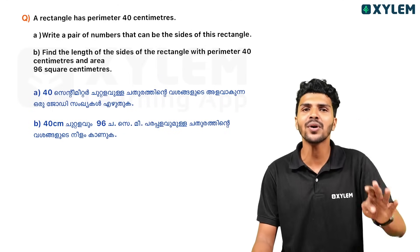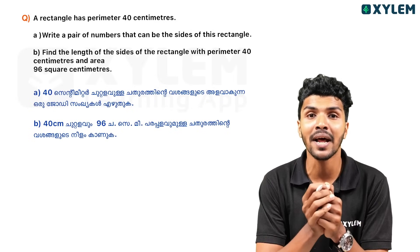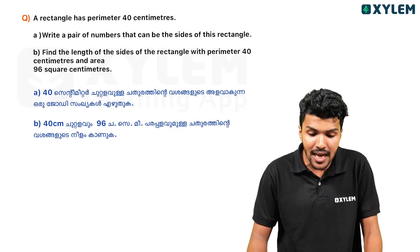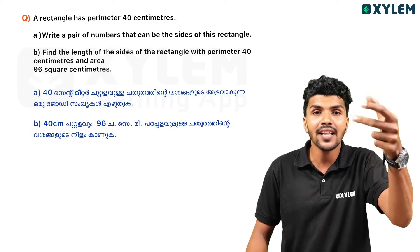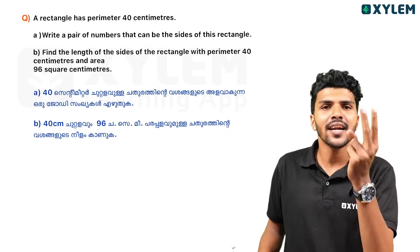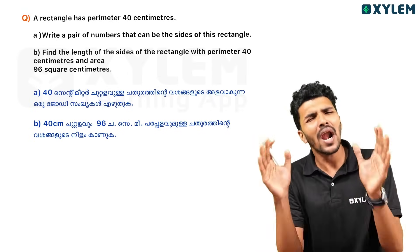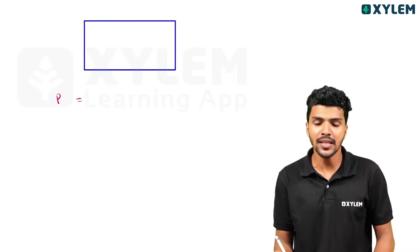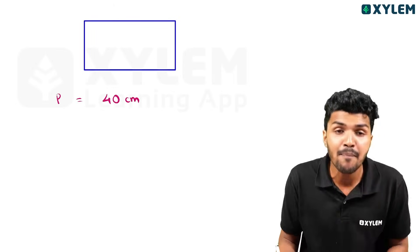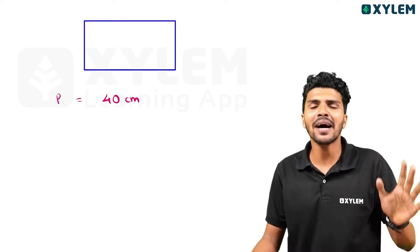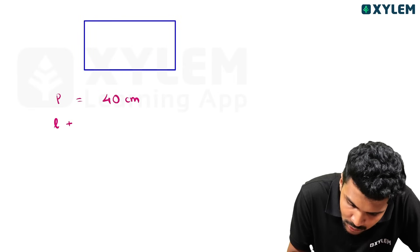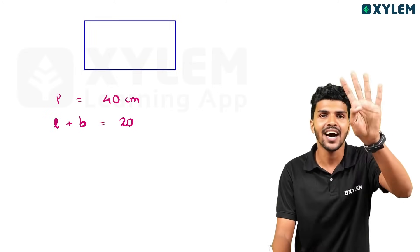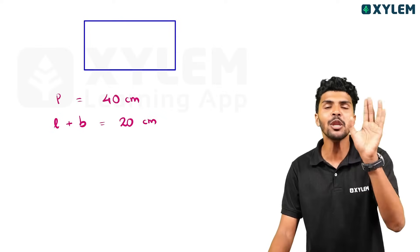A rectangle has a perimeter of 40 cm. You can write a pair of numbers that can be the sides of the rectangle. Since the perimeter is 40 cm, length plus breadth equals 20 cm. For example, if the length is 14 cm, the breadth is 6 cm — because 14 plus 6 equals 20.